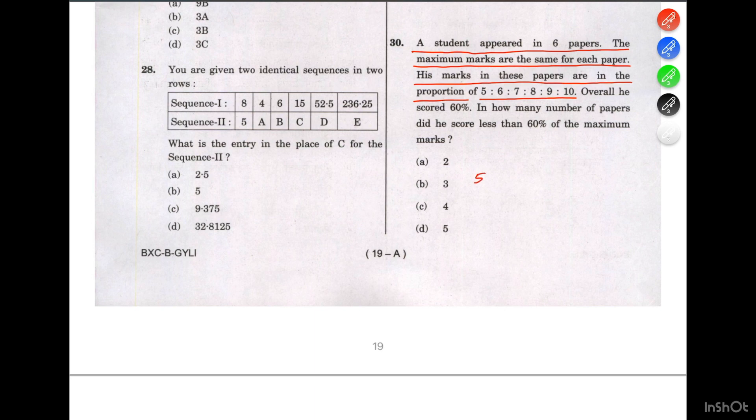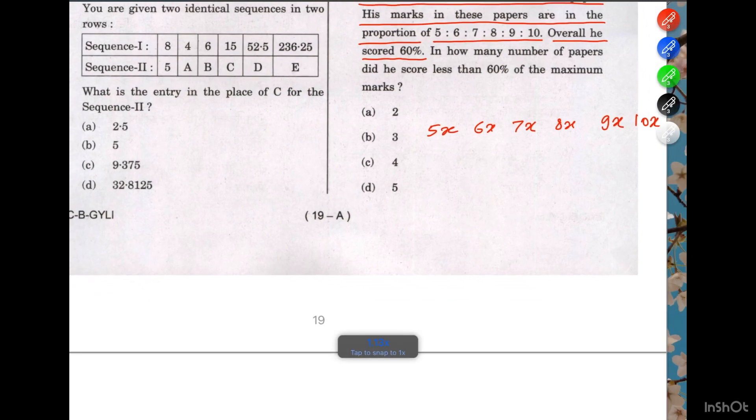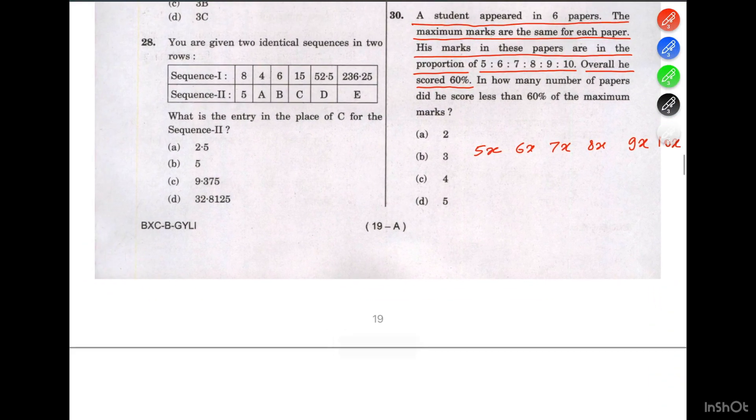Let's consider the first paper - he got 5x marks, then 6x, then 7x, then 8x, then 9x, and then 10x because they are in proportion, so there must be a common multiple.